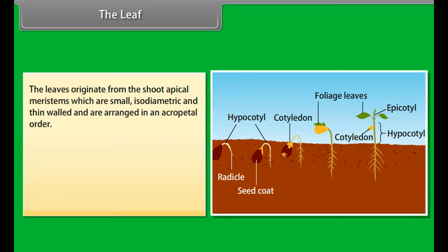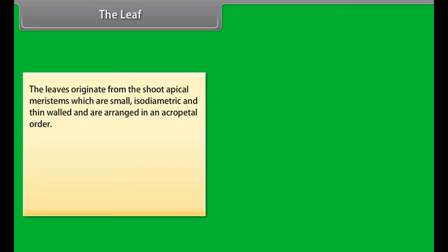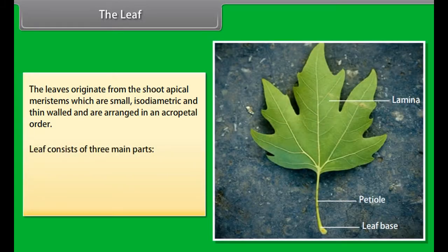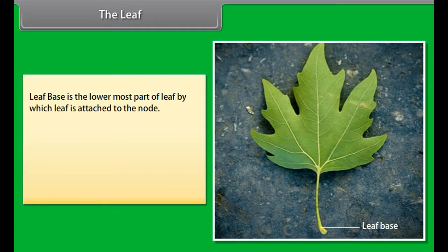The leaves originate from the shoot apical meristems, which are small, isodiametric and thin-walled, and are arranged in an acropetal order. Leaf consists of three main parts: leaf base, petiole, and lamina.